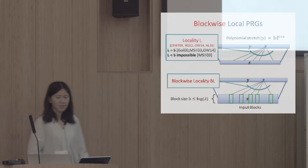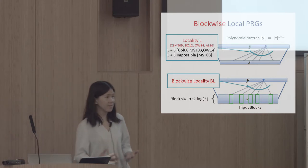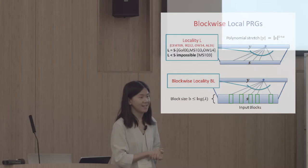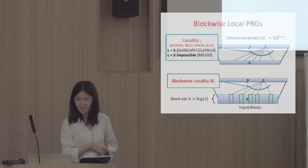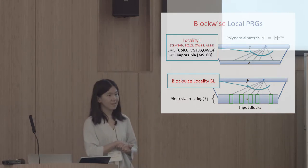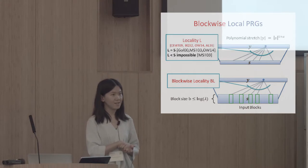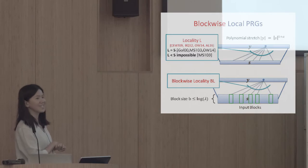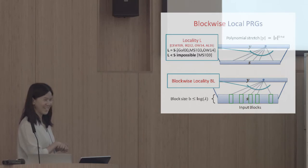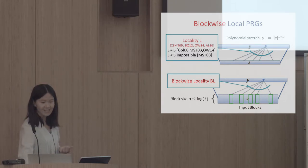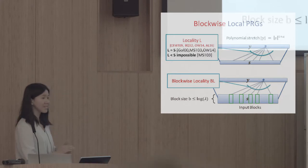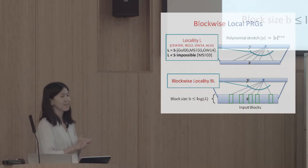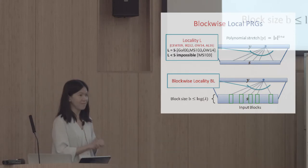The constraint is that each block size is at most log lambda. We started a preliminary study on blockwise local PRGs. The most natural kind you can think of is to just use Goldreich's local functions and replace each input bit with an input block. Such PRGs are parameterized with a bipartite graph with degree BL indicating the input-output dependency graph, and a vector of predicates where the i-th one is used for evaluating the i-th output bit. This is a somewhat high-locality predicate depending on B times BL input bits.